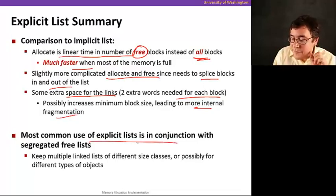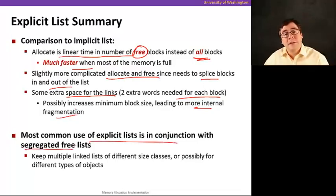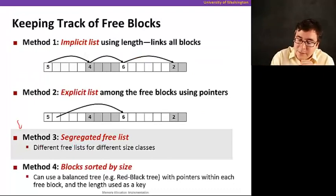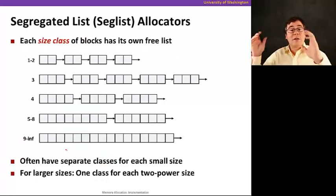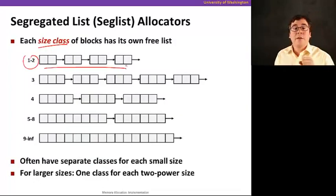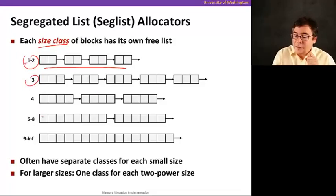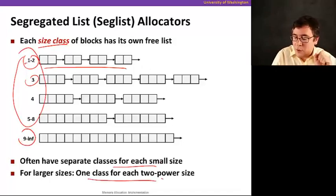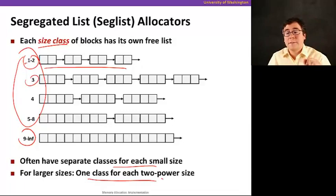The most common use of explicit free lists is with segregated free lists. The idea is to keep multiple linked lists for different size classes of free blocks, and even possibly different types of objects. We have a bunch of size classes and for each size class an explicit free list. For small sizes we often have a separate class for each individual size, and for larger sizes we have one list per power-of-two size range.